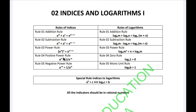Rule four: you can convert any index from a positive form to a negative form, and vice versa. If you have a to the power m, you can write its reciprocal as one over a to the power minus m. Rule five, the negative power rule: if you have a negative power, you can write it as a positive power. So a to the power minus m equals one over a to the power plus m.